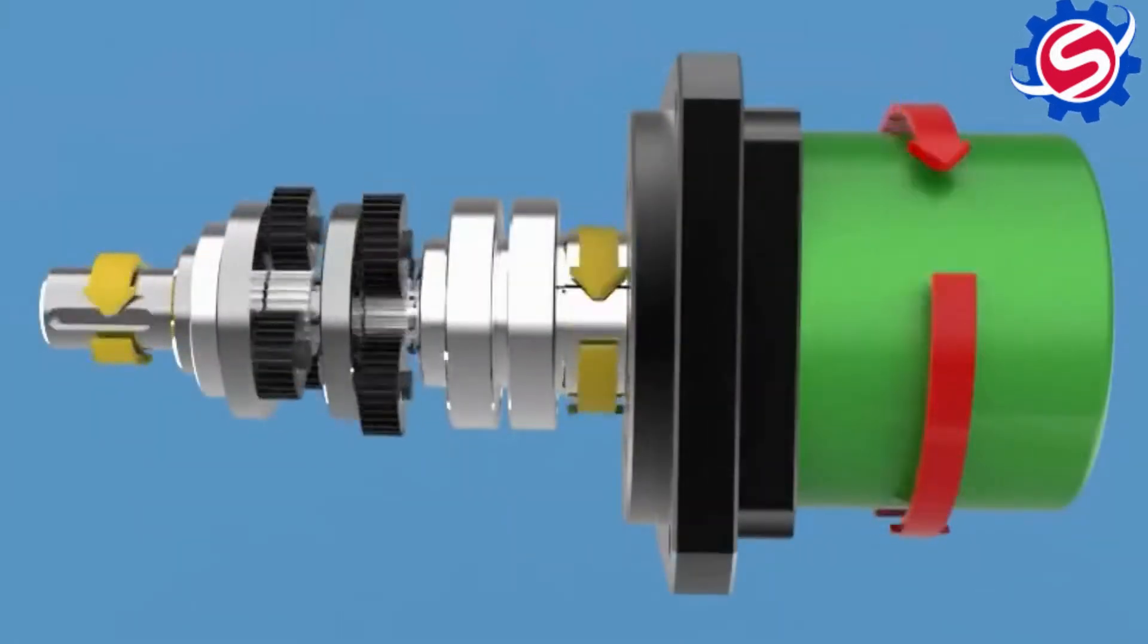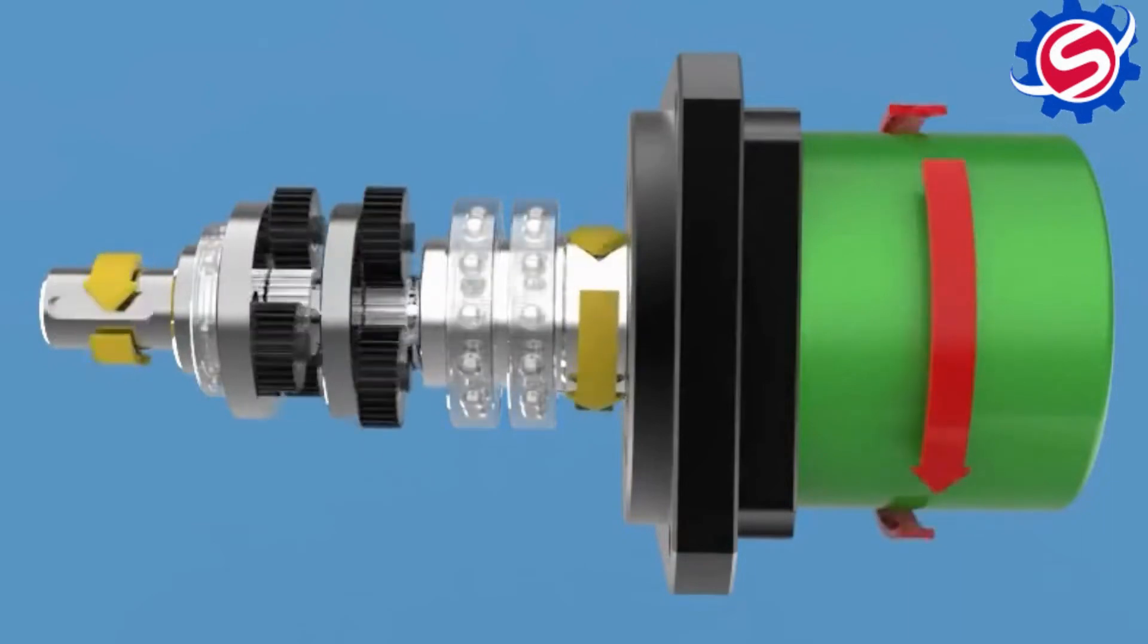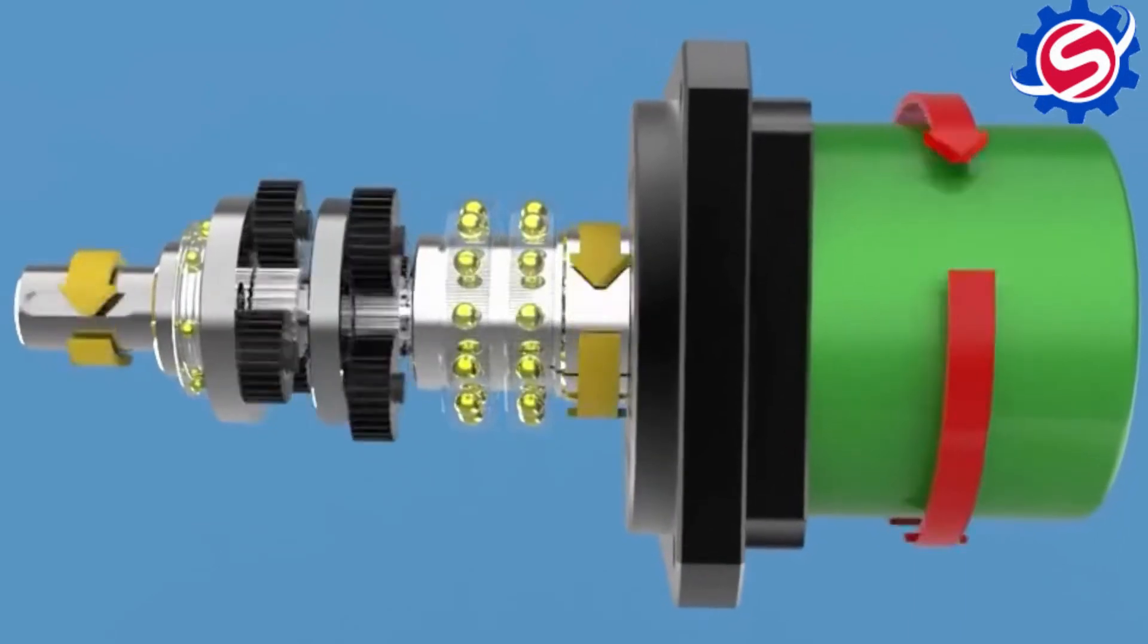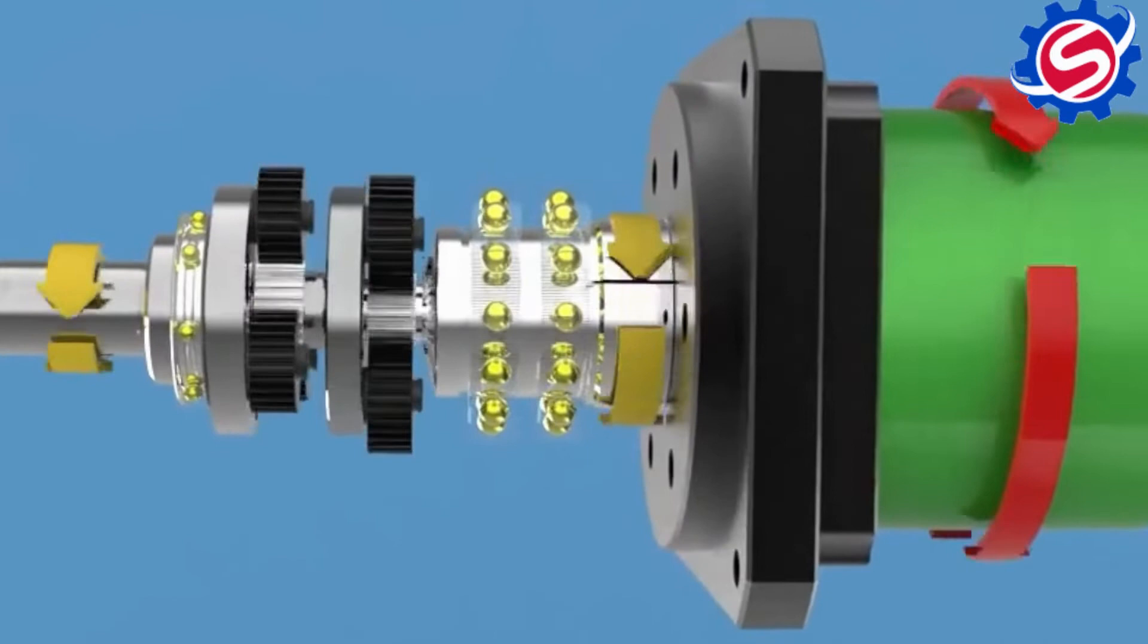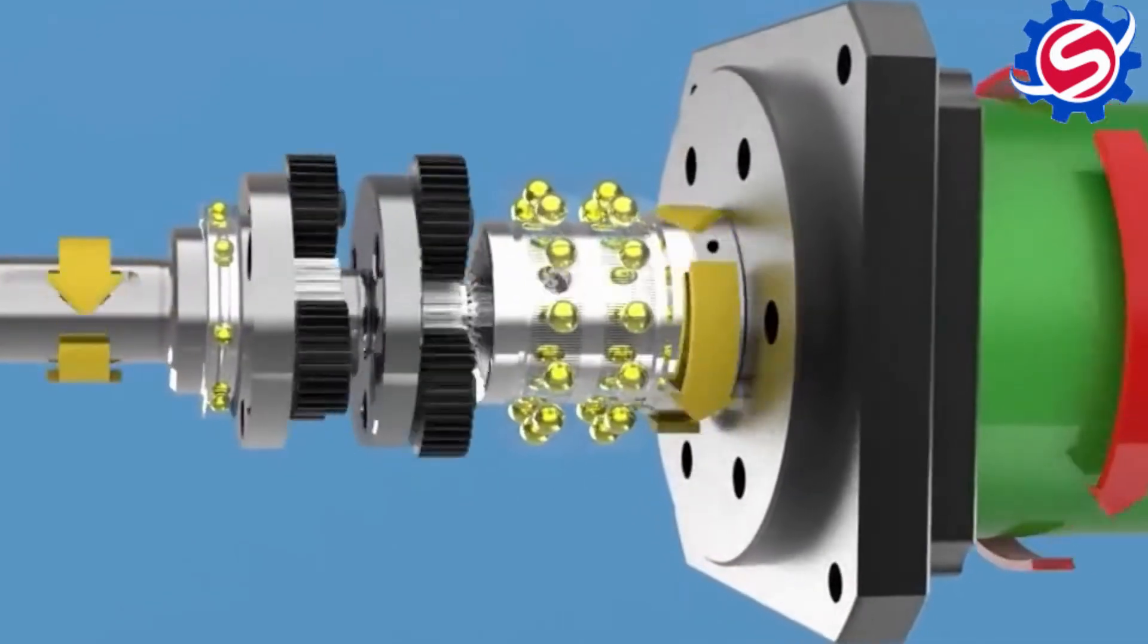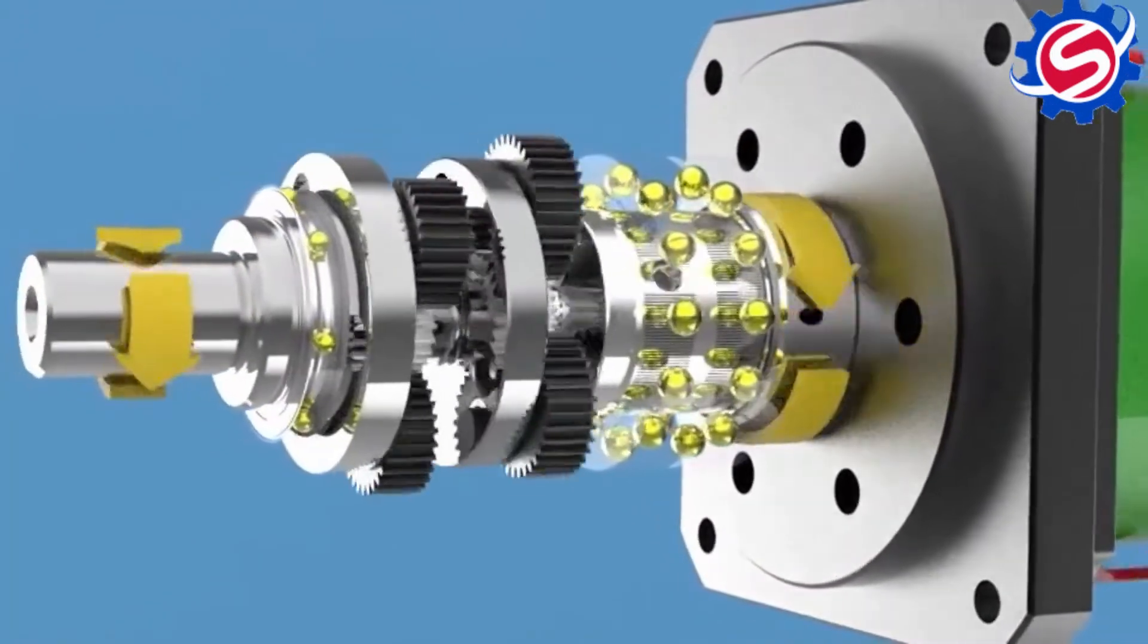The output of the first planetary gear set is the input of the second planetary gear set, and this whole rotary reduction system is supported by ball bearings. Ball bearings act as support to the output shaft, and a key slot is provided to the output shaft.